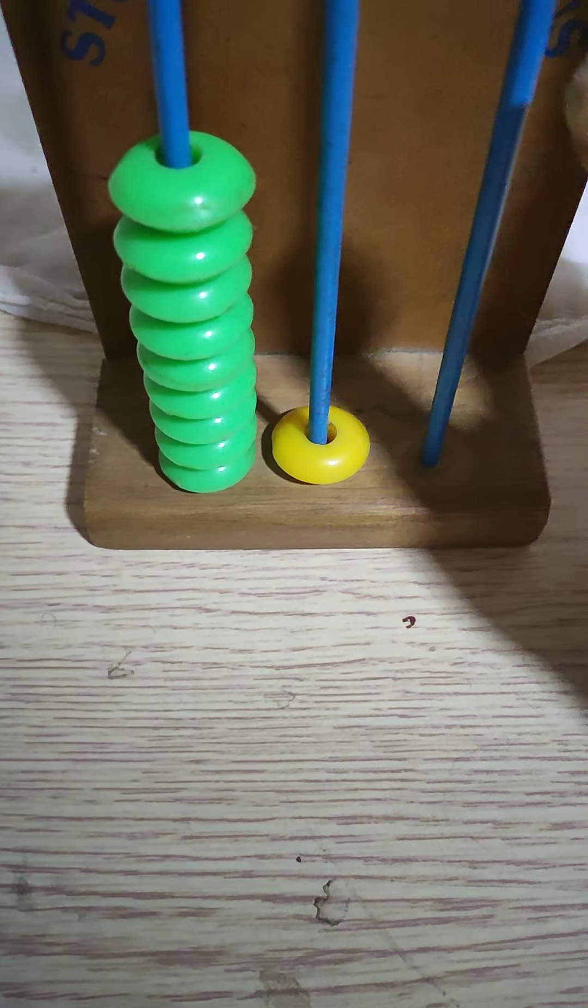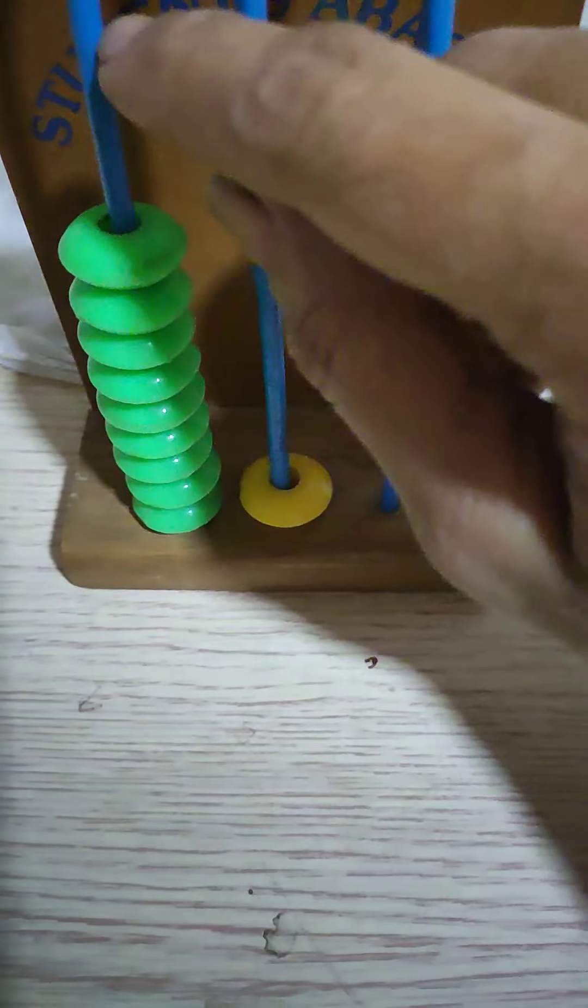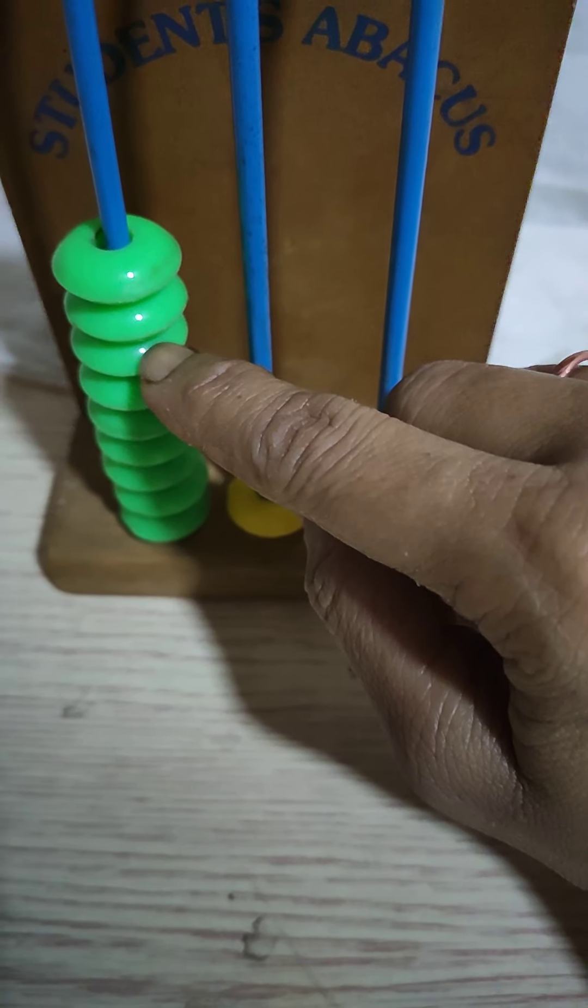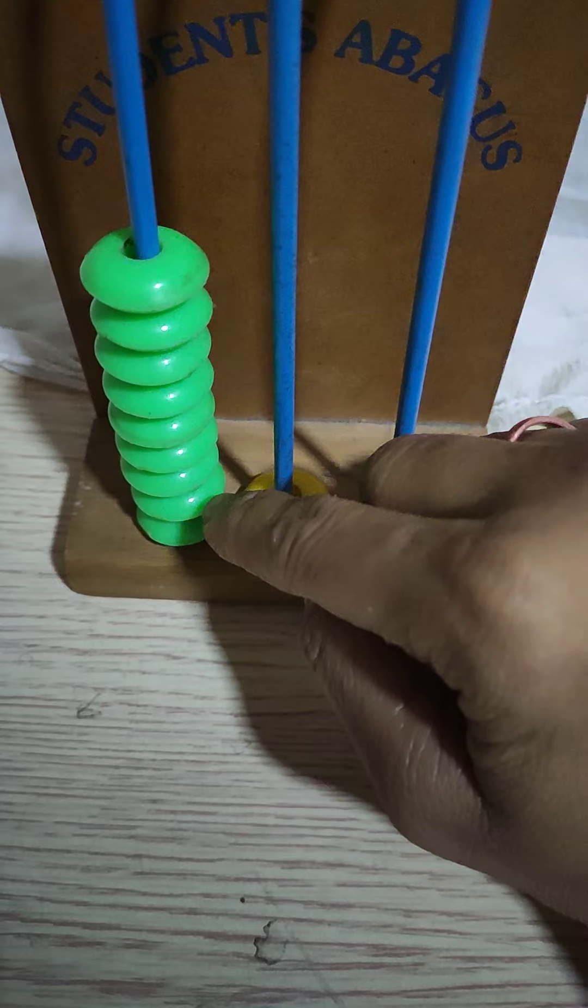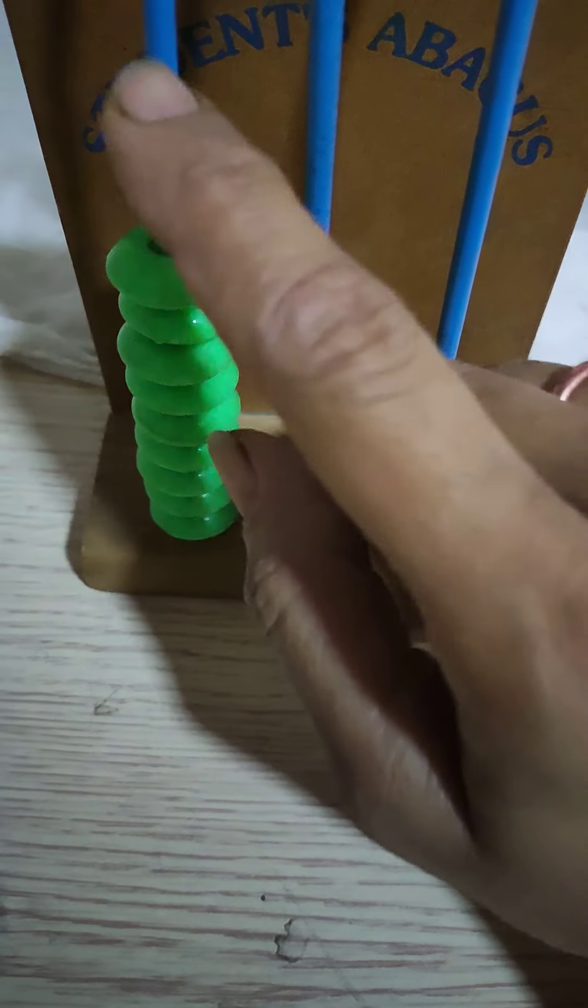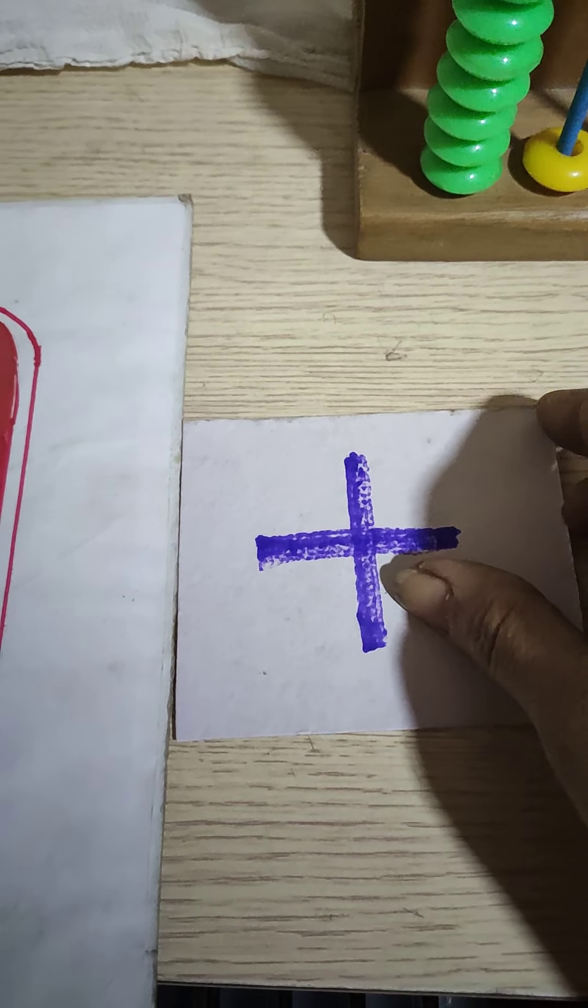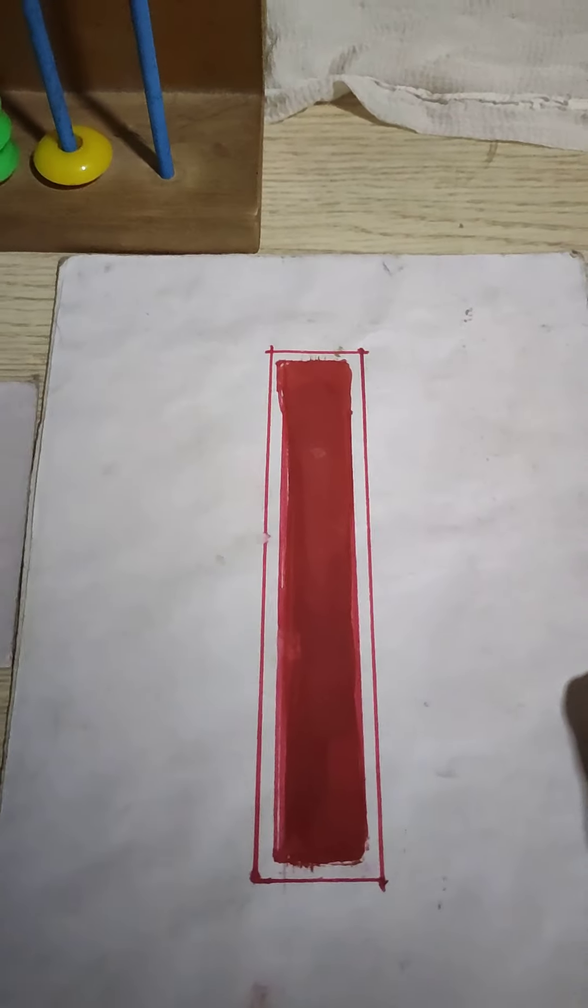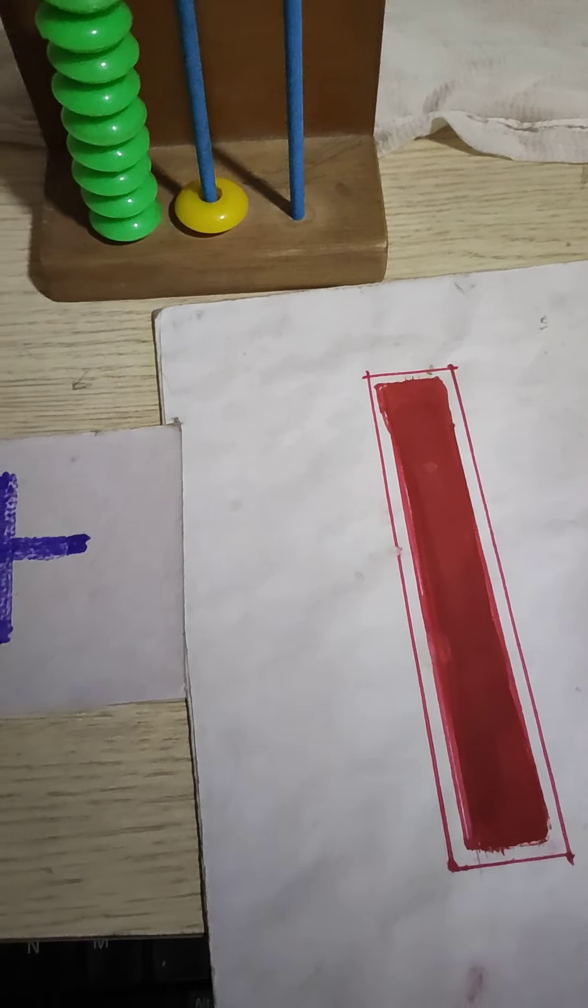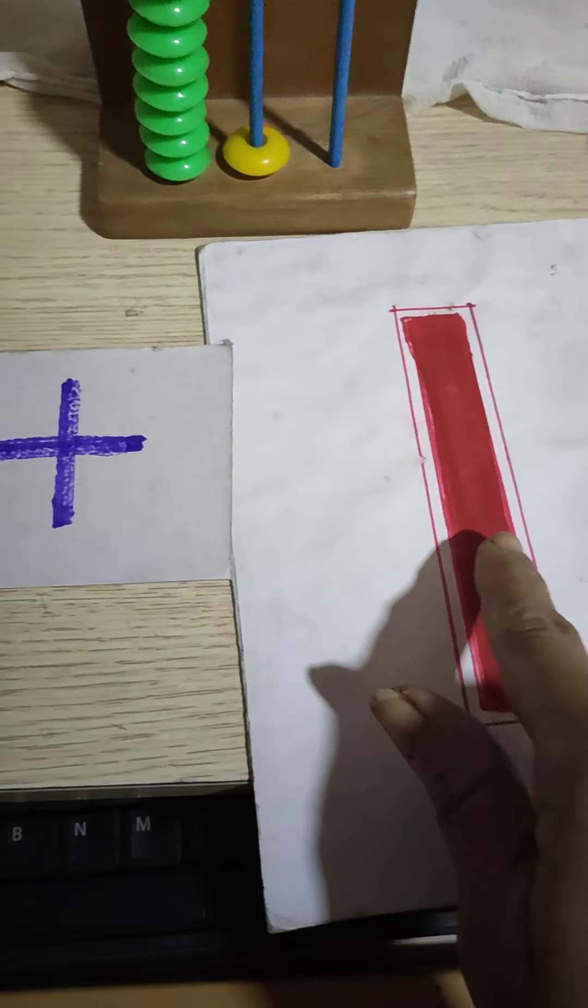Let's see an example. Here first we have to count the beads. Come on. 1, 2, 3, 4, 5, 6, 7, 8, 9. How many beads? 9 beads. 9 plus, we have here one more bead.